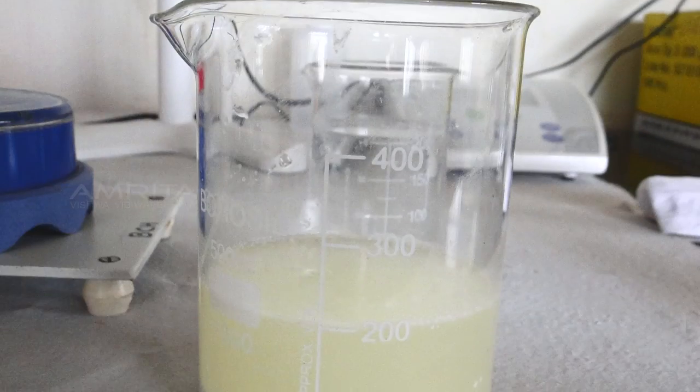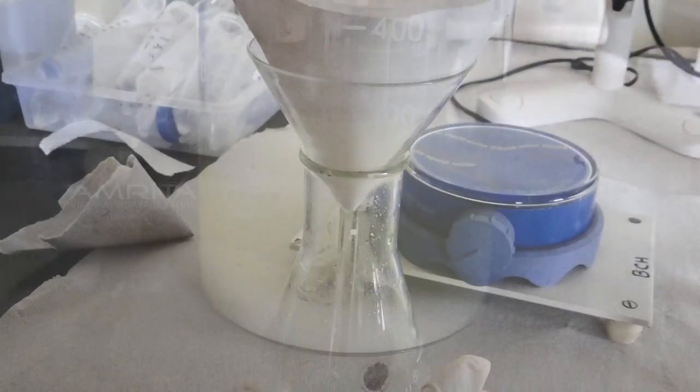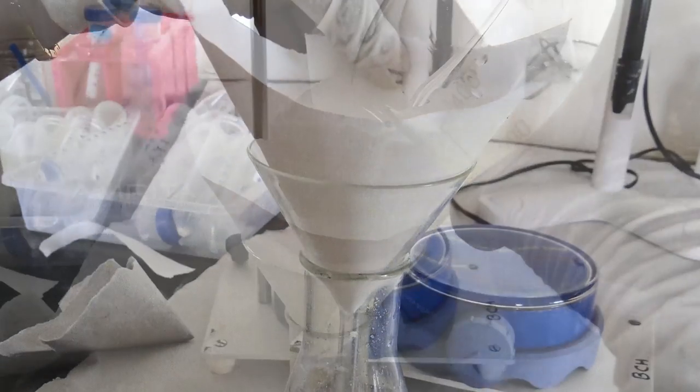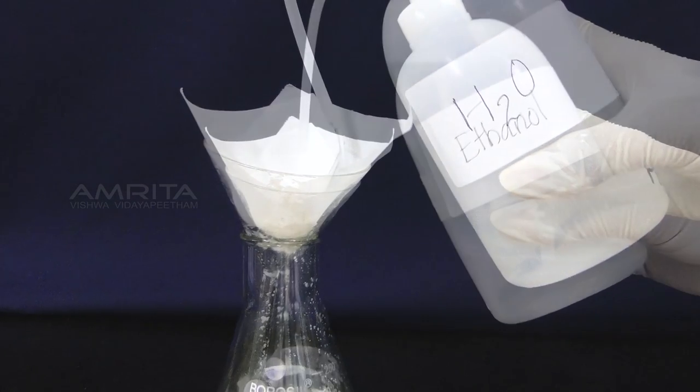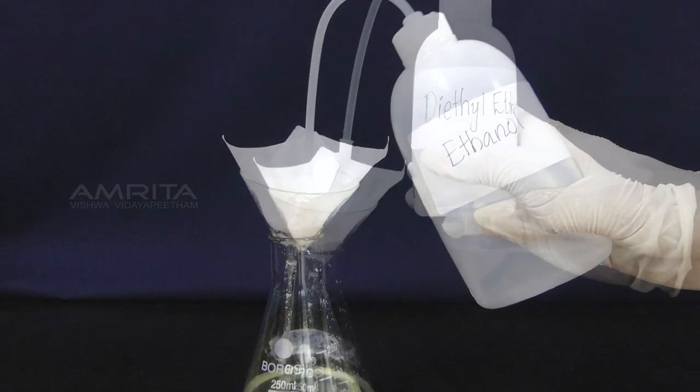Wait till the precipitated casein settles down. Filter out the casein by pouring it through a funnel and a filter paper. Wash the precipitated casein first with distilled water and then with ethanol and lastly with diethyl ether.